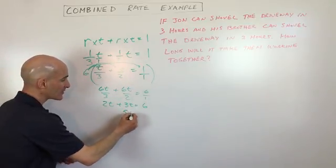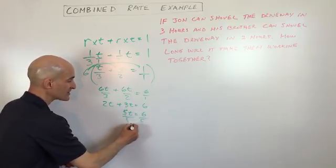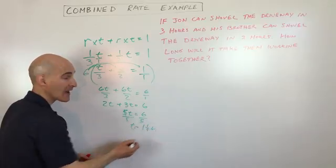So now if we combine like terms, we get 5t equals 6, we divide by 5, and you can see the time is going to be one and one-fifth of an hour.